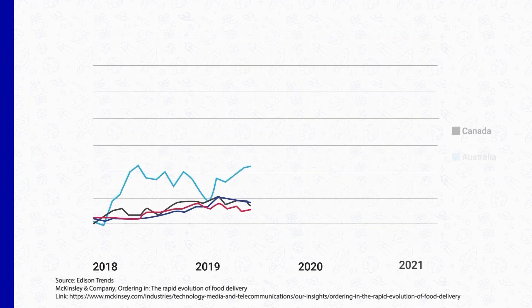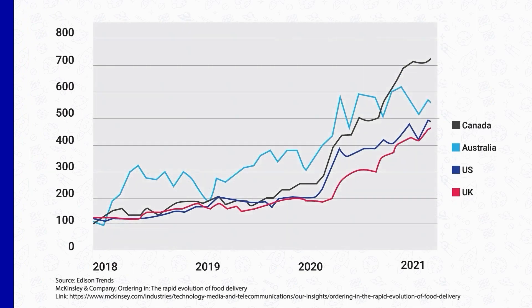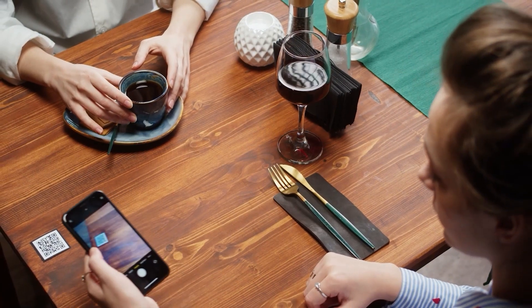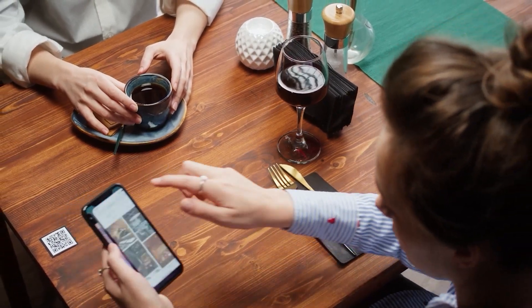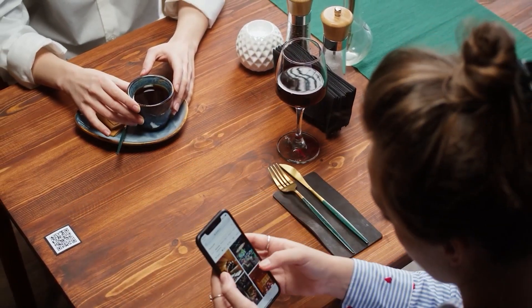If you run a restaurant, a WhatsApp QR code can open even more possibilities. Since the start of the pandemic, online food orders and deliveries have skyrocketed, redefining restaurant services. To ensure your business benefits from this trend, you can use a WhatsApp QR code to allow your customers to order, track or cancel their food, as well as chat with customer support instantly and with ease.